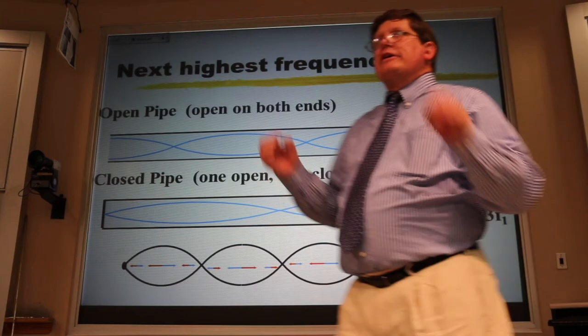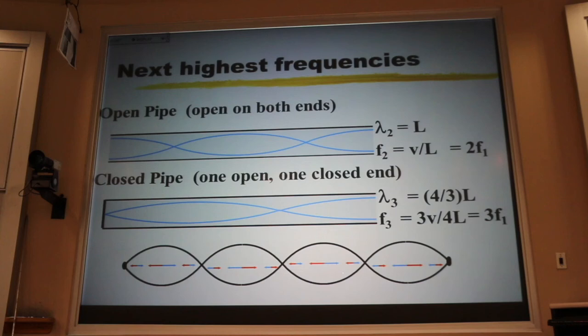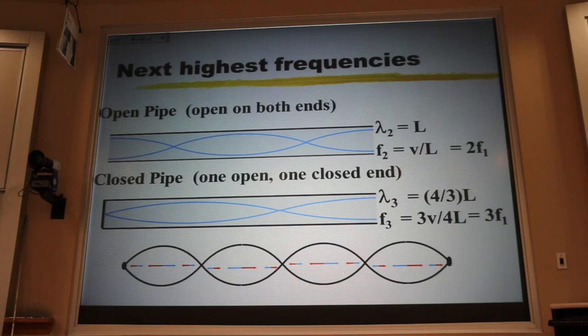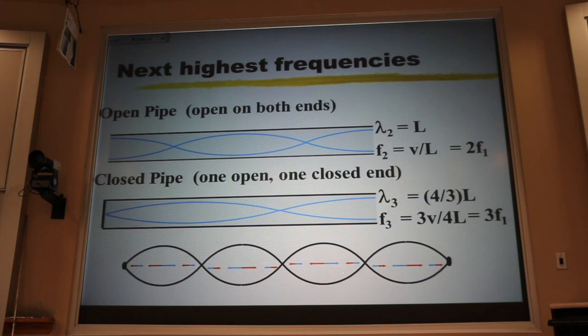So, once again, even with organ pipes, when the ends are the same—open to open—I get all the harmonics: F1, F2, F3, F4, F5. When one end is closed and one end is open, I only get the odd harmonics. So this is the summary: ends are the same, all of them. Ends different, odd.